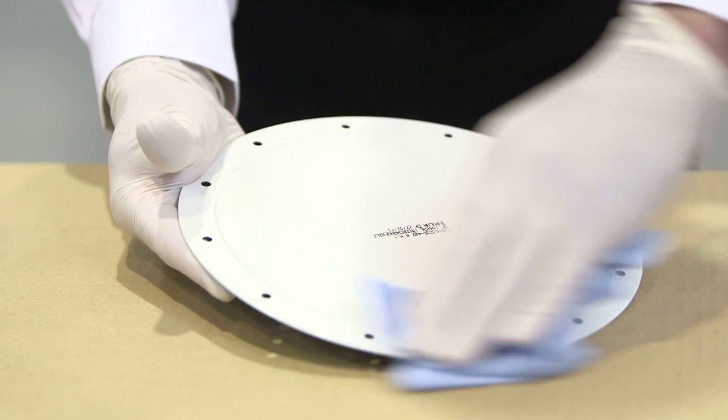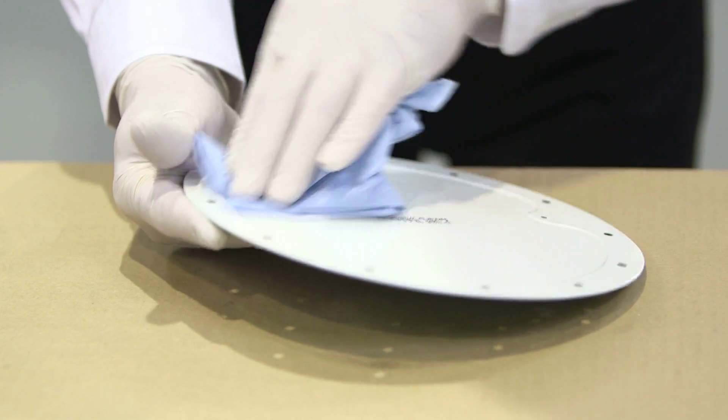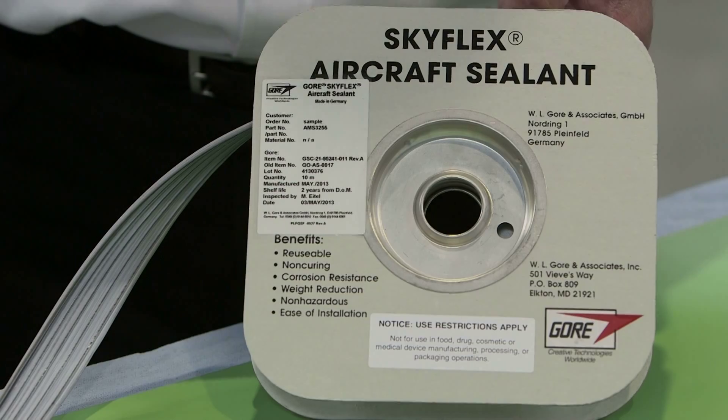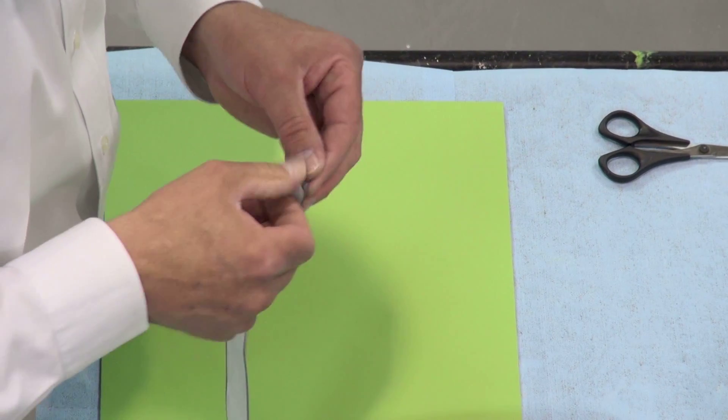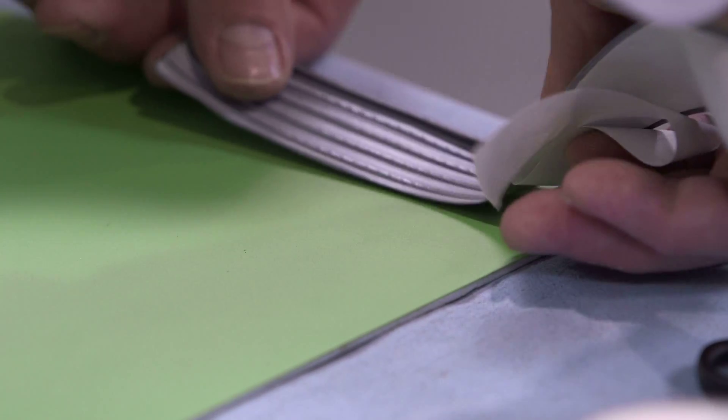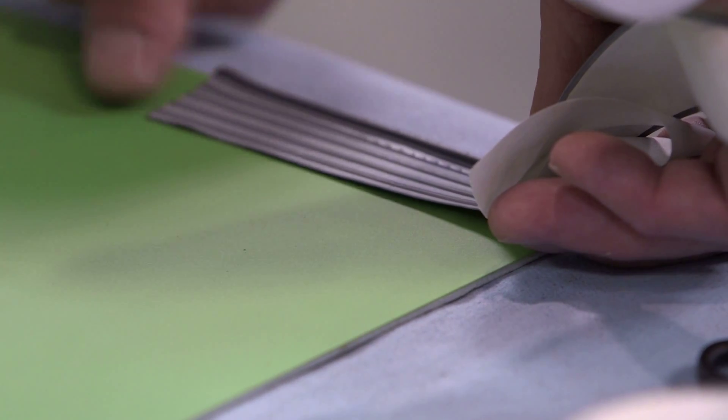Surfaces should be cleaned with an appropriate cleaner such as isopropyl alcohol and cloth. To assist assembly, Skyflex is typically specified with a pressure sensitive adhesive or PSA. This is protected by a backing release liner which should be removed during the assembly process.